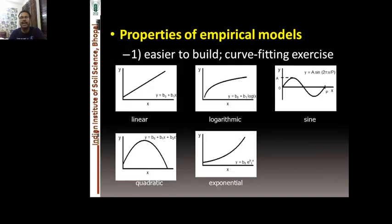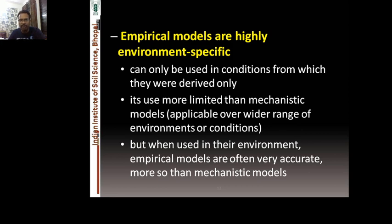Examples of empirical models include linear, logarithmic, sine, quadratic, and exponential functions — they are easier to build. A key characteristic of empirical models is that they are highly environment-specific, meaning they can only be reliably used under the conditions from which they were derived. They are therefore more limited than mechanistic models in applicability. However, when used within the environment in which they were built, empirical models are often very accurate — sometimes more so than mechanistic models.